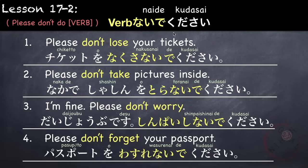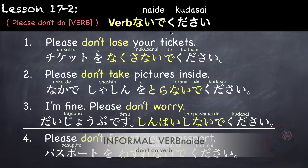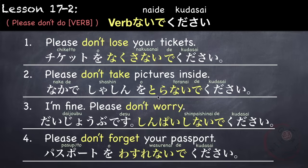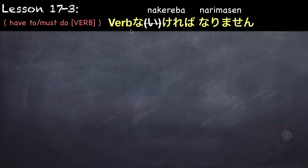Of course, you can simply say verb nai de to be less formal — it means 'don't do verb.' For example, 'don't lose your tickets,' or 'don't take pictures inside' — nakade shashin o toranai de — and so on. Another use of the verb nai form is to say 'have to' or 'must do a verb.'